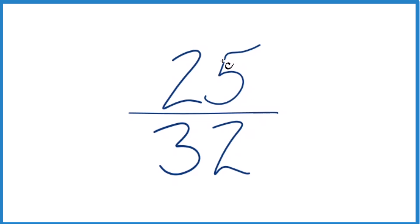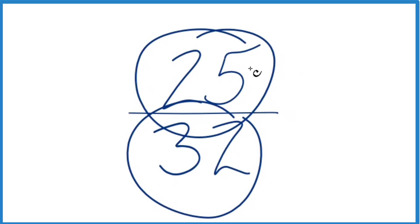To do that, we need to find a common factor, something that goes evenly into 25 and 32, a whole number that goes into 25 and 32.